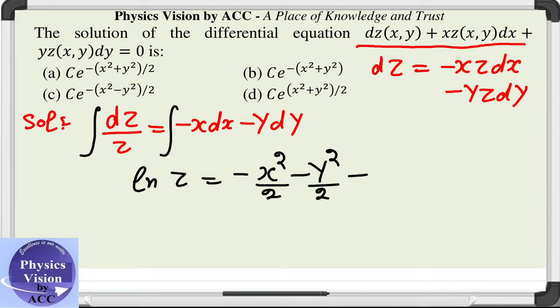We can take another constant in this form, let us say plus log c. That means it will become log(z/c) = -(x² + y²)/2.